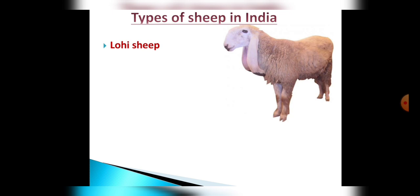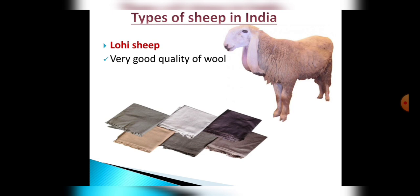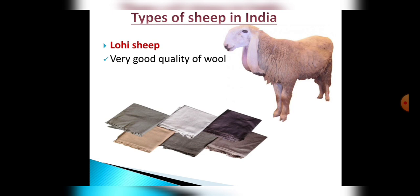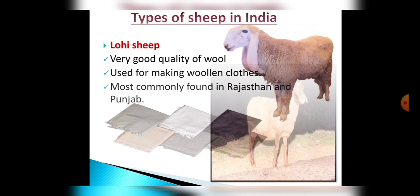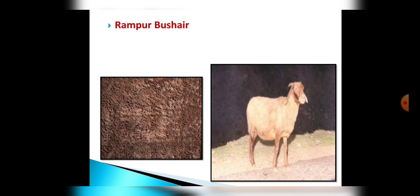This first picture is of Lohi sheep, which gives us very good quality of wool. This wool is used in making woolen clothes, and these kinds of sheep are most commonly found in Rajasthan and Punjab.